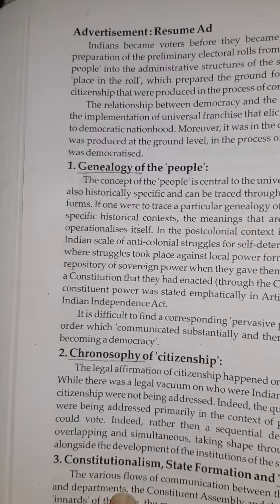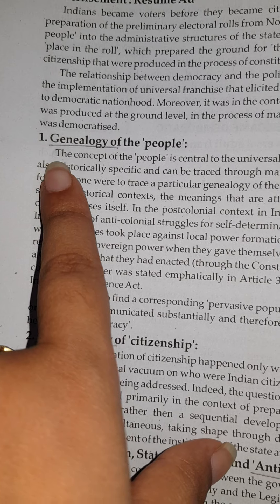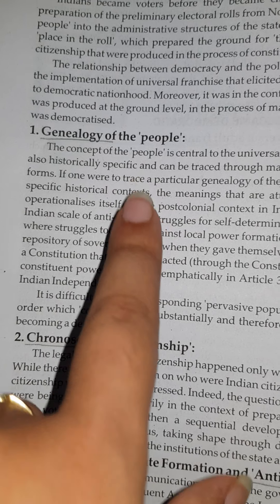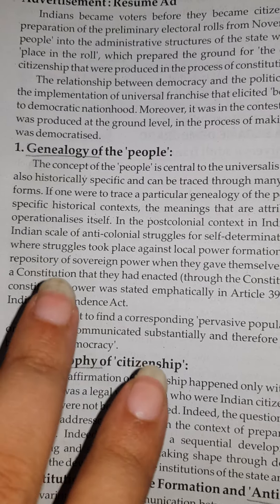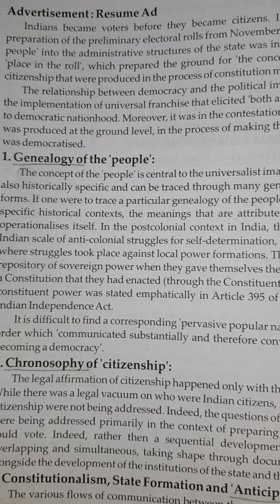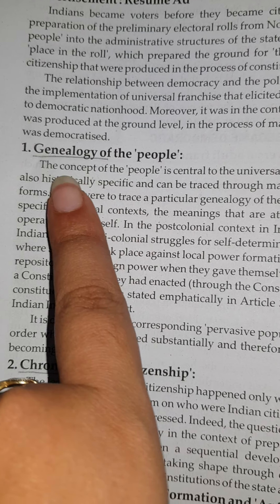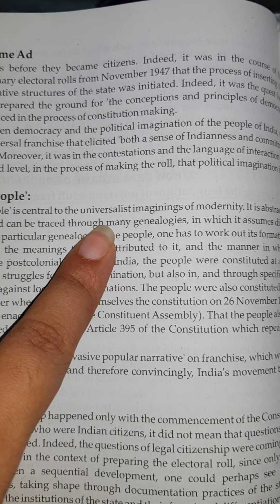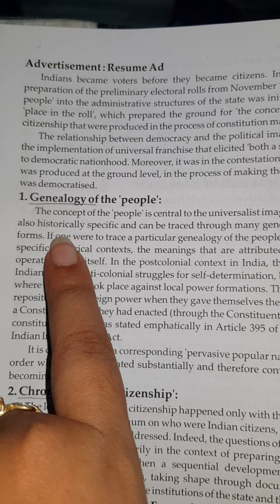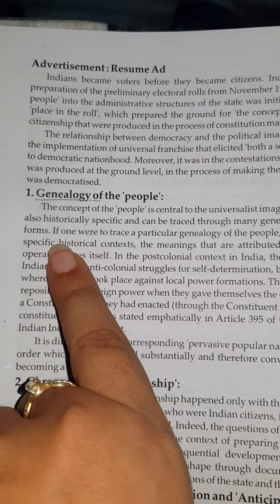Now we will start from the other necessary things which are required after the electoral roles. First is genealogy of the people. The meaning of genealogy is the study of family history. The central part or main focus of the election and the parties were the people — people were at the center. The concept of the people is central to the universalist imagination of modernity.